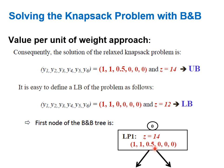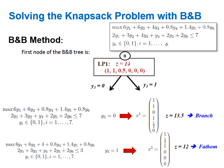We branch on the fractional variable y3. For binary decision variables, branching fixes their values: one child node has y3 equal to zero and the other has y3 equal to one. We now have two open nodes. According to breadth-first search, we select from the highest level; since both nodes are at the same level we can select either one.